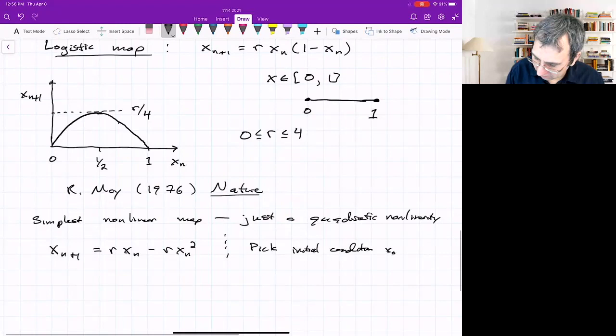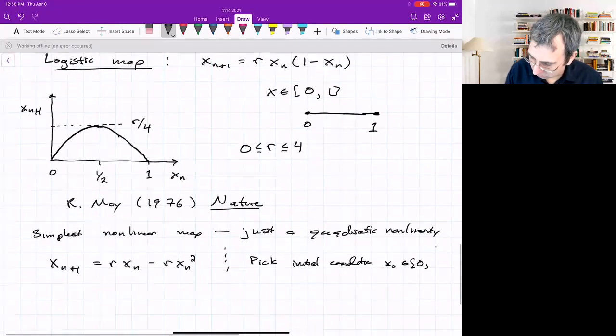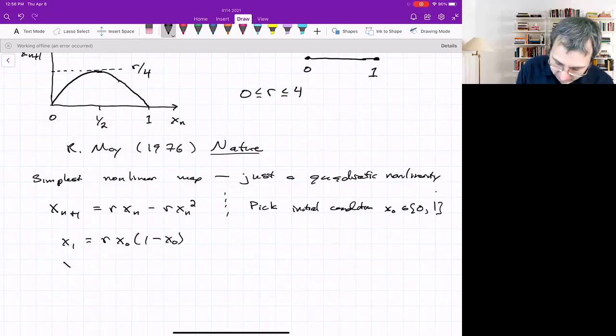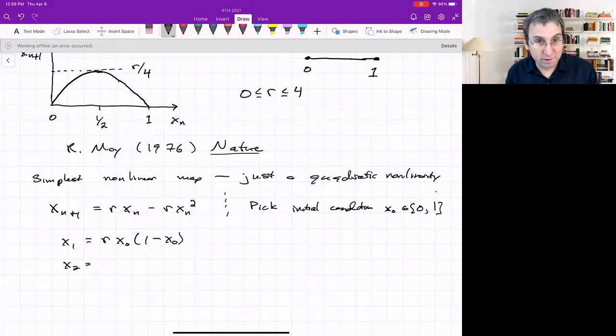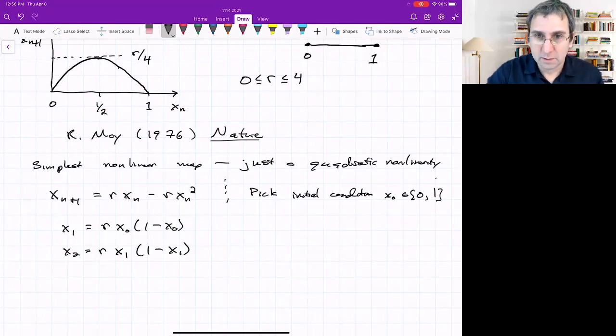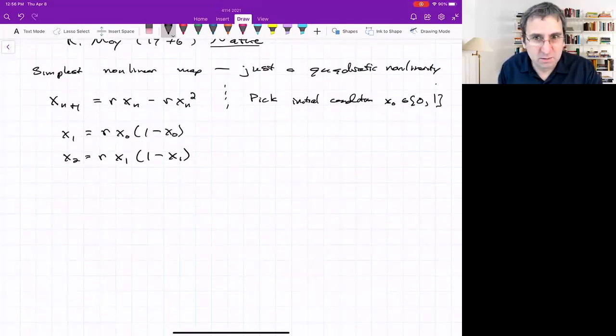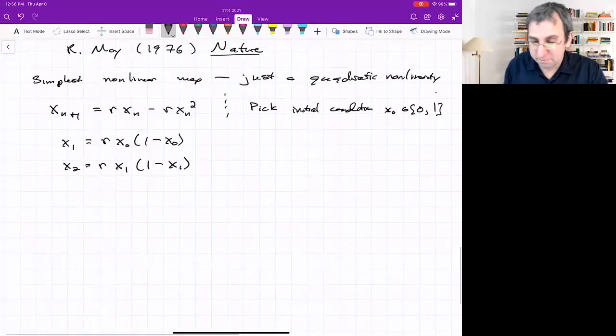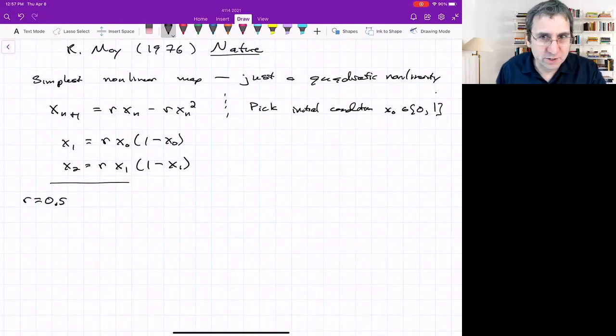You can pick an initial condition X_0, which has to be somewhere in this interval between 0 and 1. Then you would write X_1 equals rX_0(1-X_0), and then X_2 is whatever you get for X_1. It's really simple to code up as a for loop and then plot it. You could just see what happens.